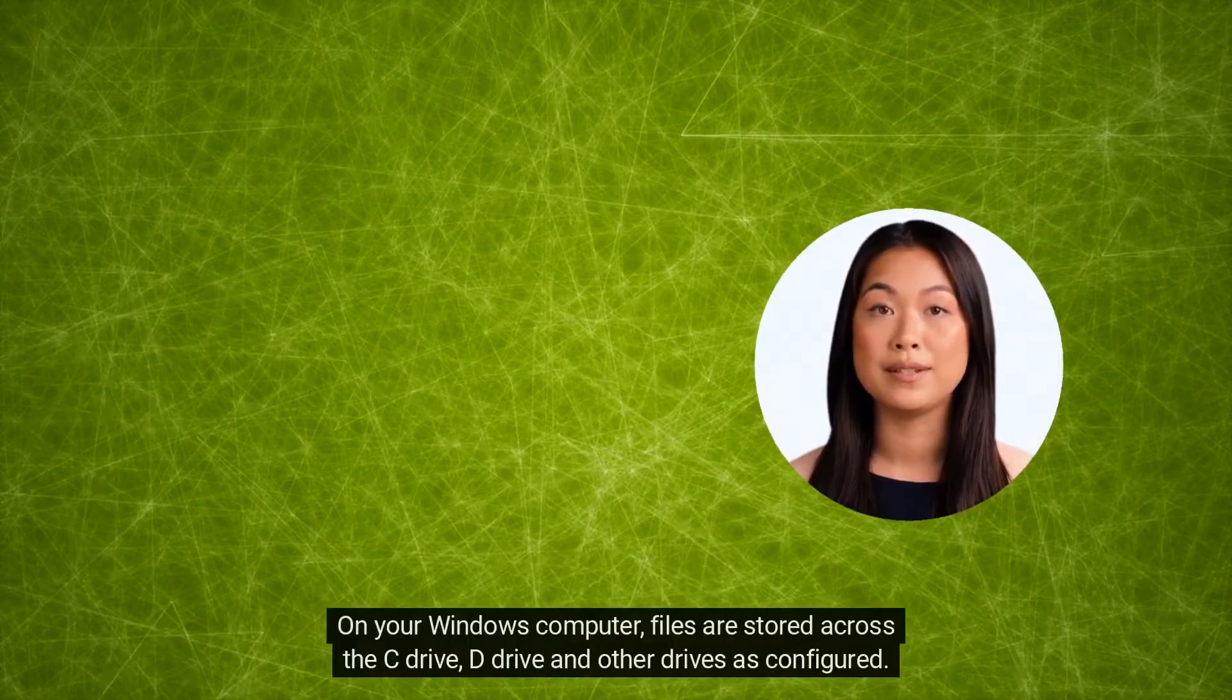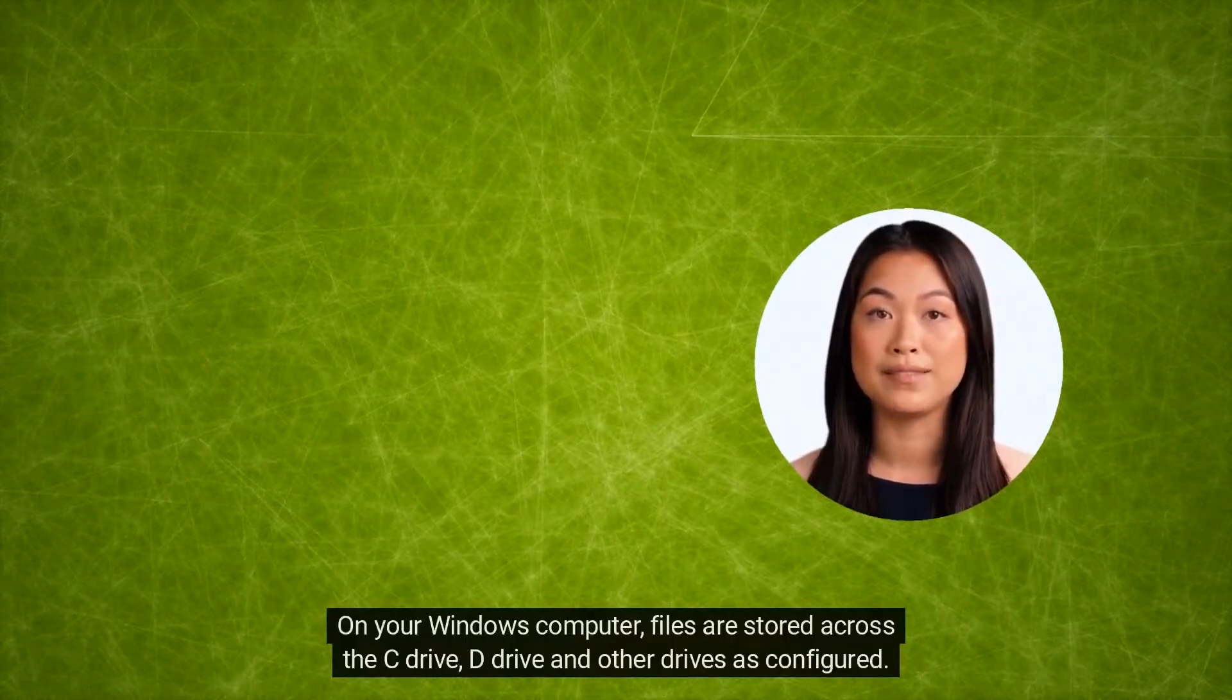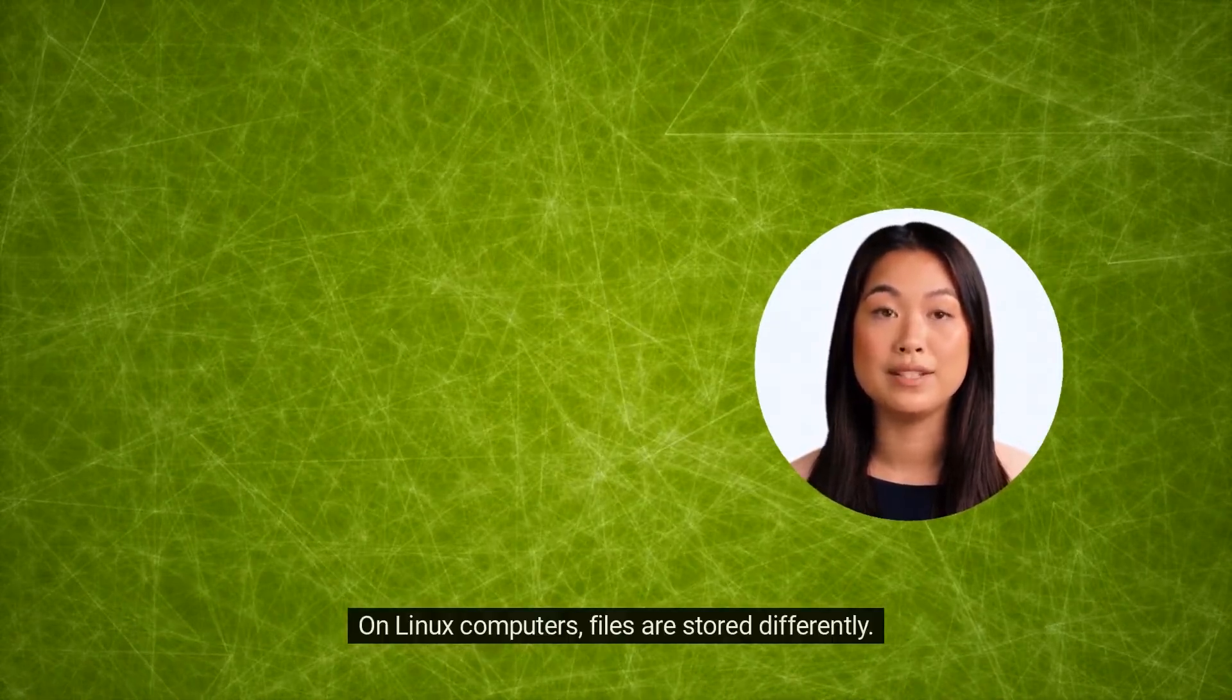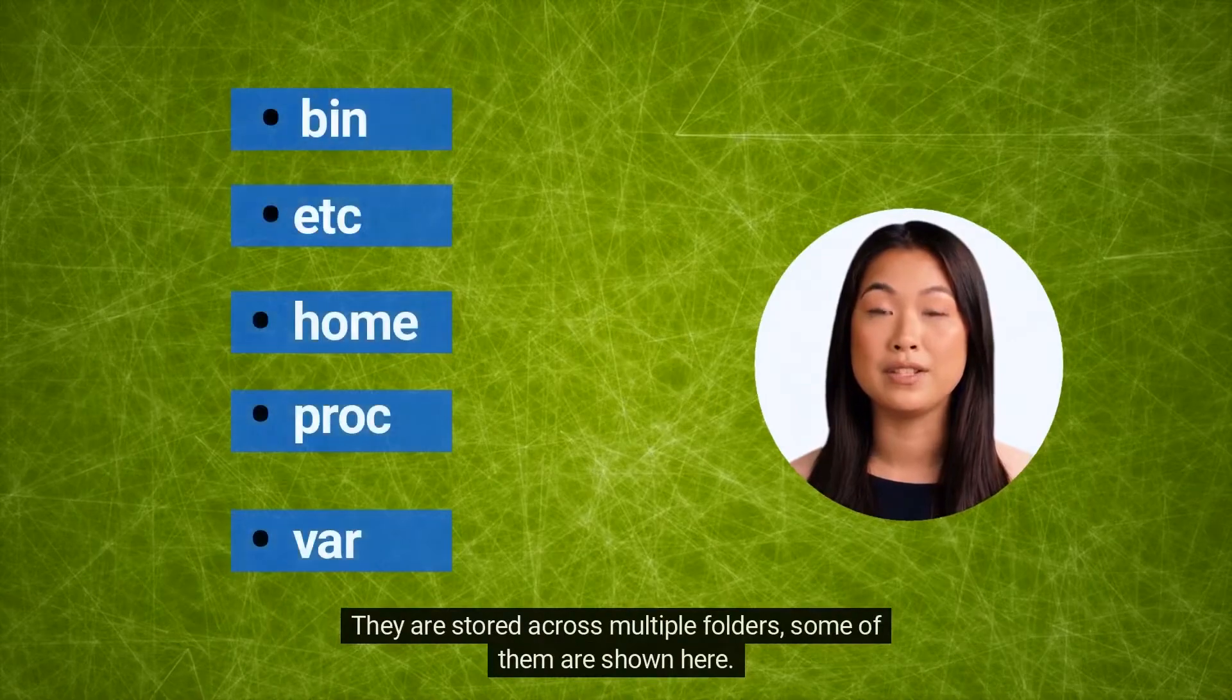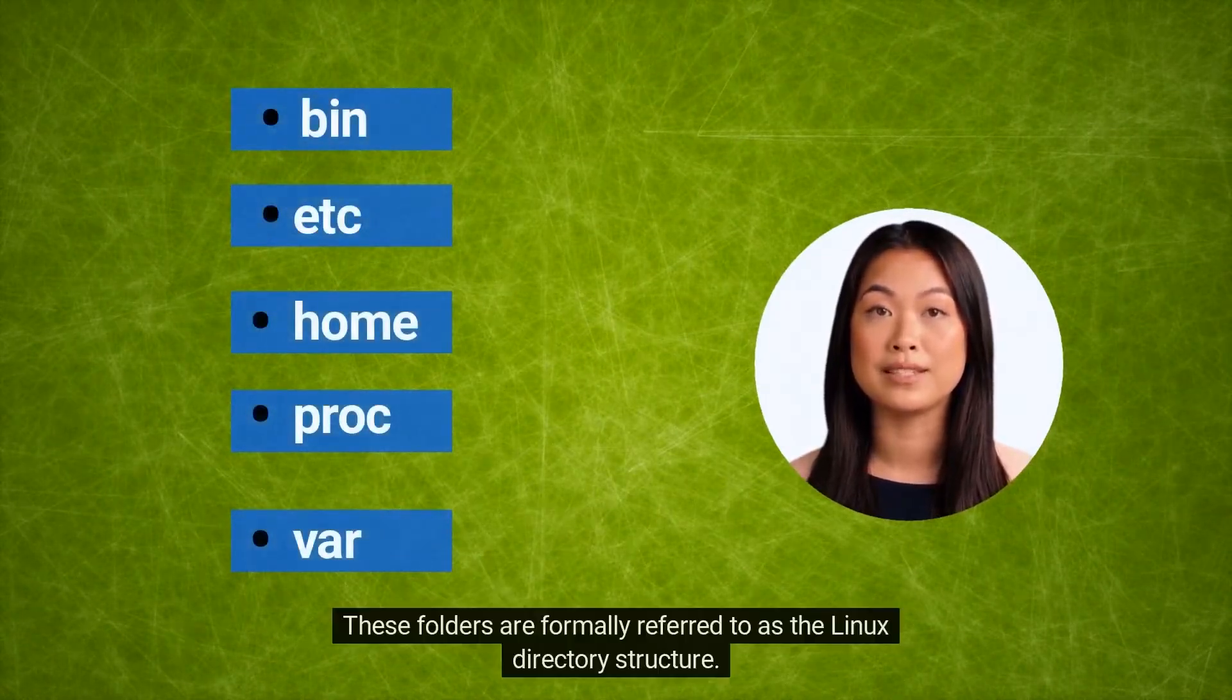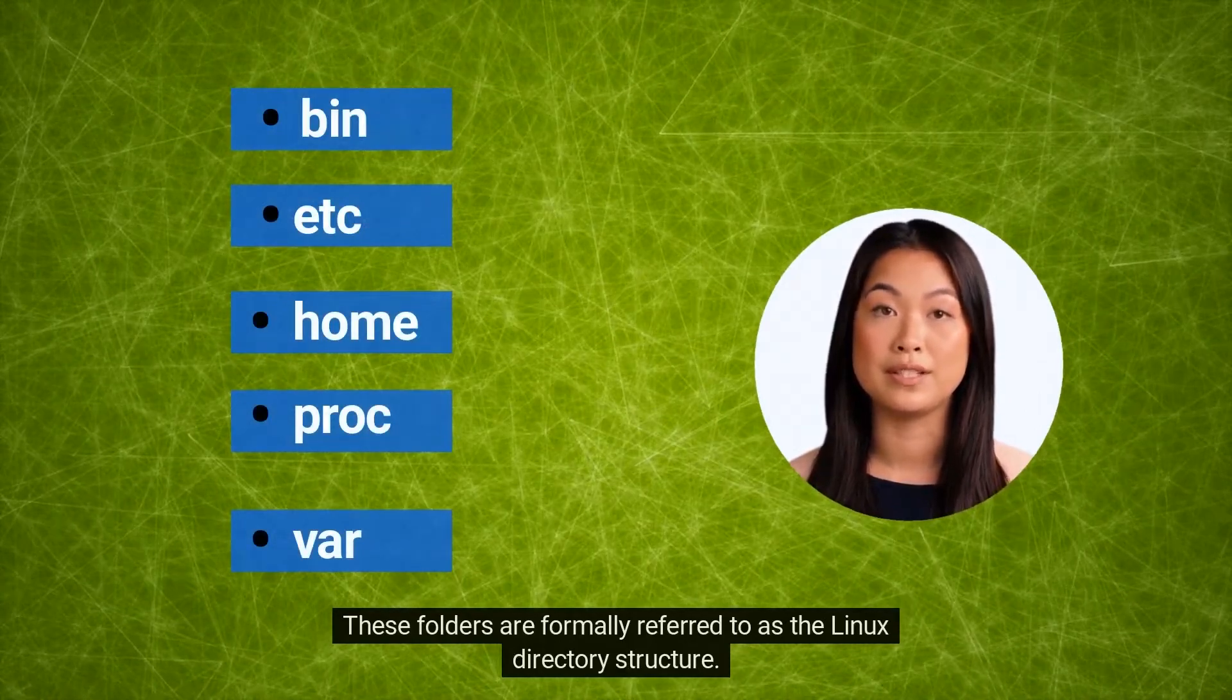On your Windows computer, files are stored across the C drive, D drive, and other drives as configured. On Linux computers, files are stored differently. They are stored across multiple folders, some of them are shown here. These folders are formally referred to as the Linux directory structure.